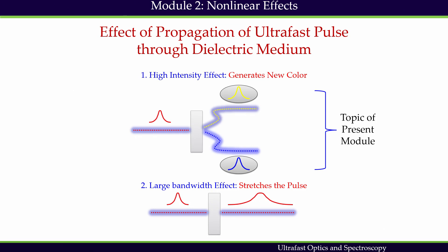In all ultrafast spectroscopy experiments, an ultrafast pulse travels through a medium such as a lens, polarizer, wave plate, or non-linear crystals. Therefore, it is quite instructive that we study the propagation of an ultrafast pulse in an optical medium. In particular, we must consider propagation through dielectric medium because most optics — mirrors, lenses, wave plates, polarizers — are made of dielectric medium.